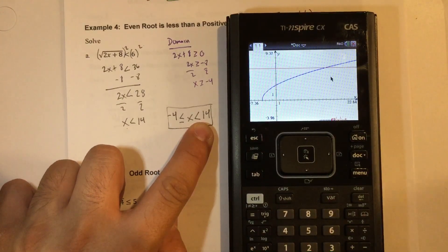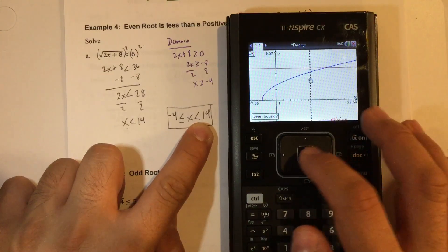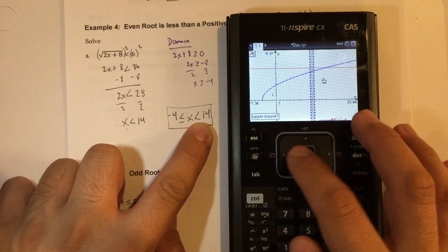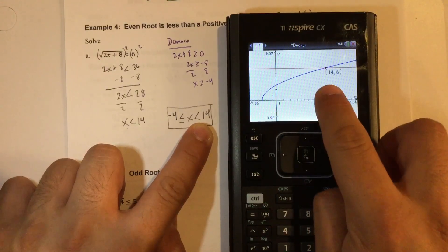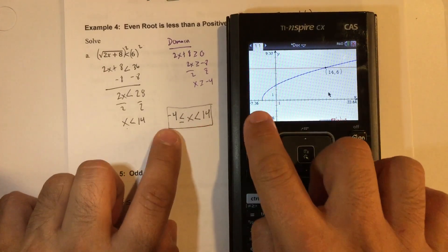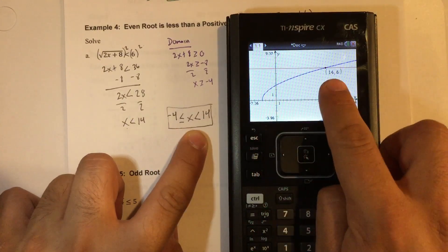And if you recall how we did on the last problem, it's menu 6, 4. So left, right, whichever side, as long as when you cover that intersection, you come up there and you can see that the x value is 14. So from negative 4 is less than or equal to x, which is less than 14.